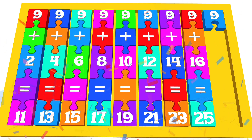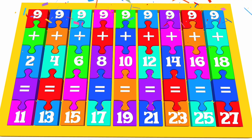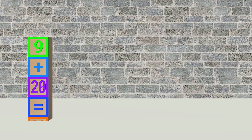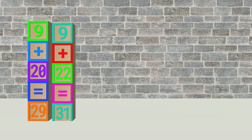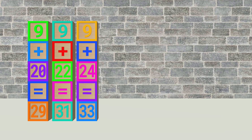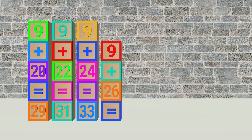9 plus 18 equals 27. 9 plus 20 equals 29. 9 plus 22 equals 31. 9 plus 24 equals 33. 9 plus 26 equals 35.